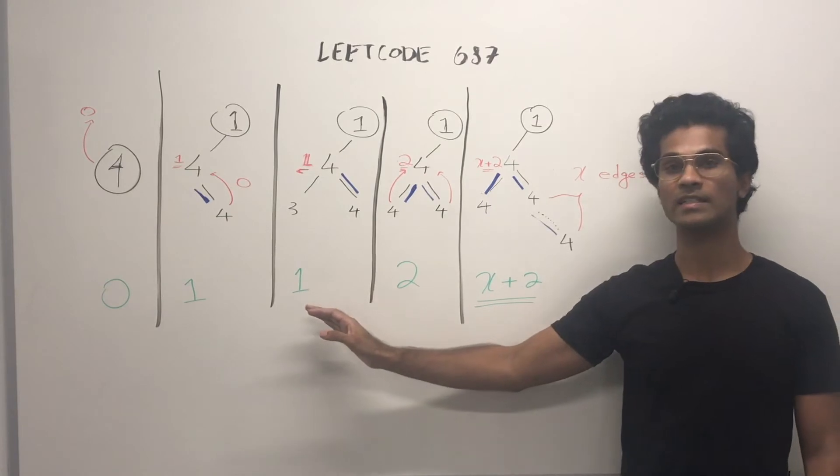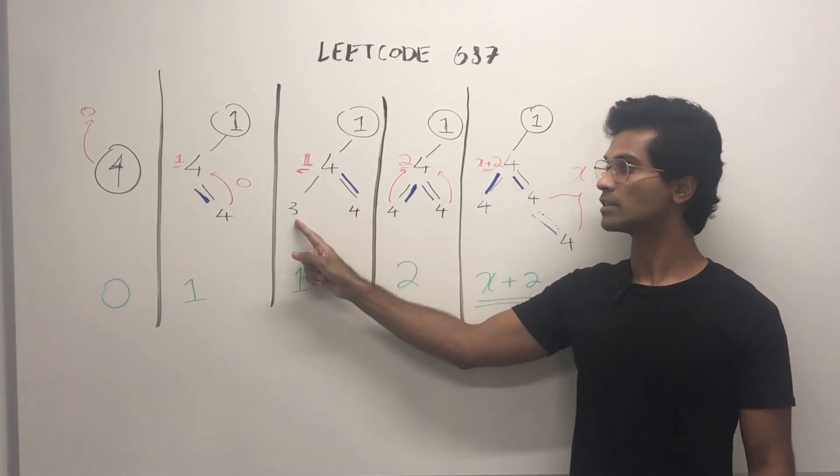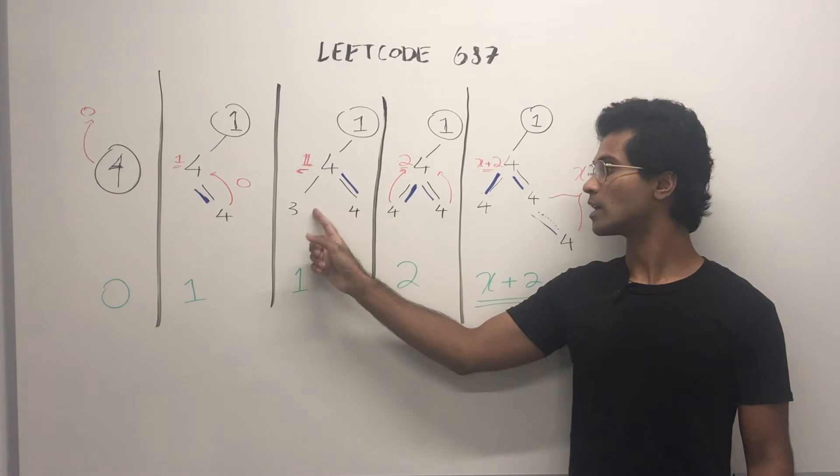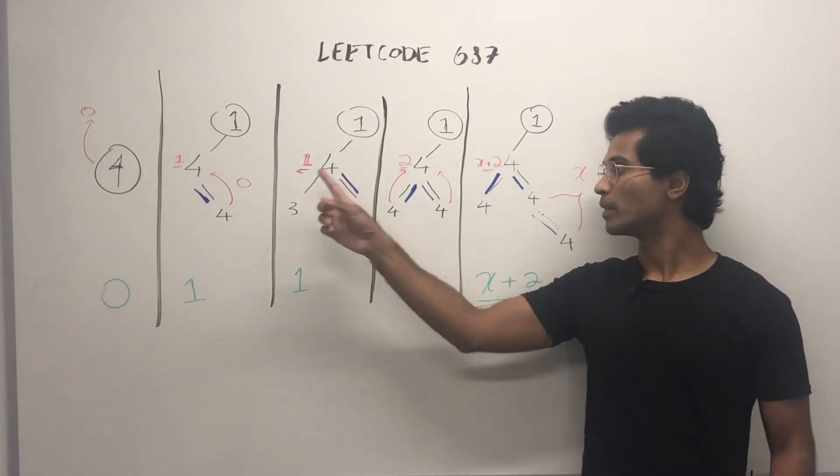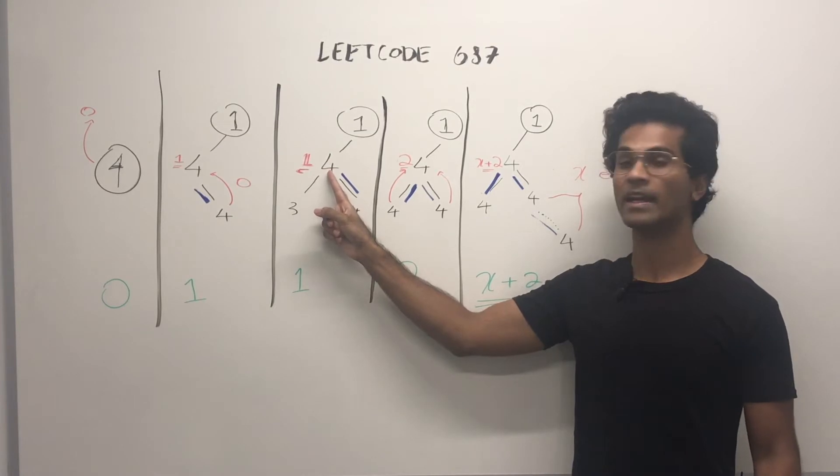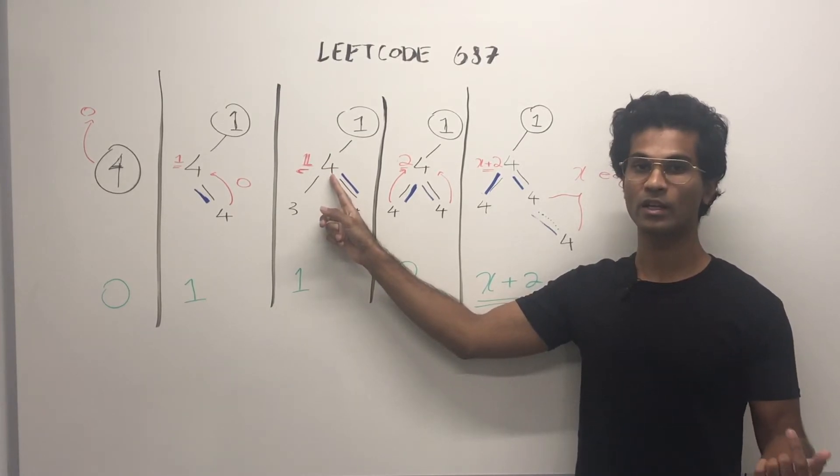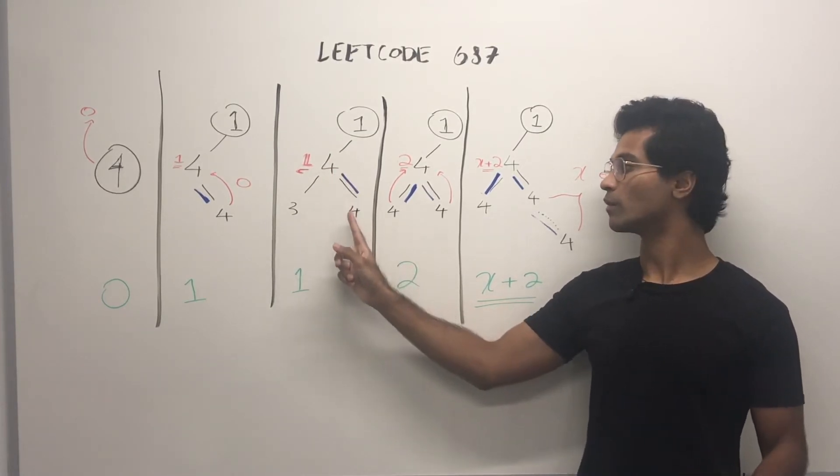In this case the output is still going to be 1 because the left child is 3. So it's going to tell its parent, I'm a leaf node so I have 0. But this parent 4 is going to see that it's different from its left child. So it's only going to include the one from its right child.